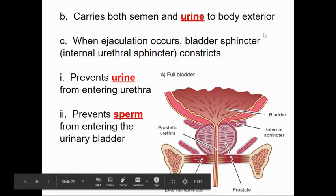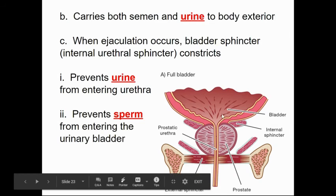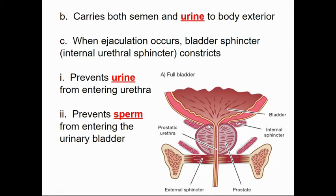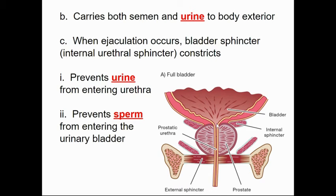The urethra differs from the female version in that it serves both excretory and reproductive functions — delivering both semen and urine. During ejaculation, sphincters prevent mixing: an internal sphincter closes off the bladder to prevent urine from entering, and an external sphincter below the prostate prevents urine from entering the urethra and also prevents sperm from going backwards into the bladder.